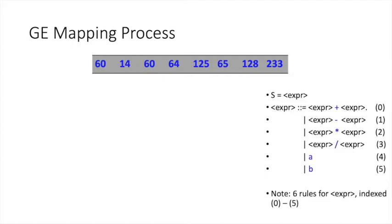GE chromosomes are strings of integers — typically these integers range between 0 and 255. We want to produce programs; even an arithmetic expression is a program, a small one but a program nonetheless. GE employs a genetic algorithm to produce these strings or chromosomes, and inside the fitness function of that genetic algorithm these strings are translated into a program. But how do we translate this set of numbers into a program?